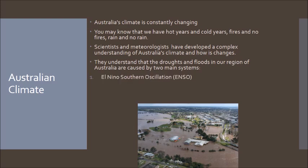The first is the El Niño Southern Oscillation, or ENSO. El Niño in Latin means 'the boy.' The reason it's in Spanish is because this weather pattern doesn't just influence Australia — it actually influences the whole coastline of North and South America as well. It's a huge, complex, and profound weather system. The second is the Indian Ocean Dipole, or IOD.